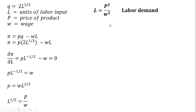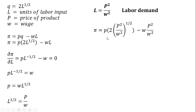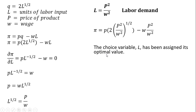Now I'm going to take this optimal L and plug it into our profit function. Where we have L, we plug in P² / W². There's also an L multiplied by the wage, so we substitute P² / W² there as well. The choice variable L has been assigned its optimal value — this is why it's called the Maximum Value function. We plug that into our profit function to obtain the indirect profit function, which we'll now simplify.